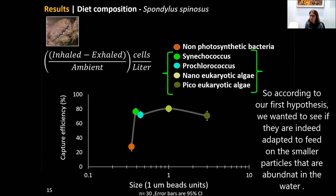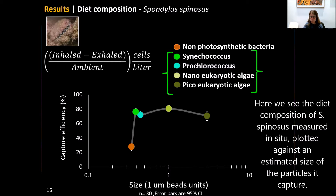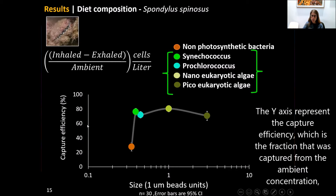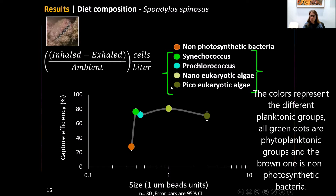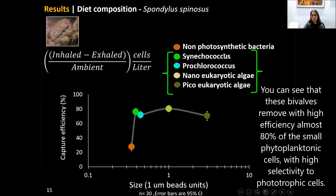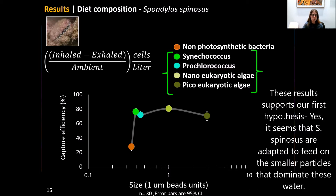According to our first hypothesis, we wanted to see if bivalves are adapted to feed on the smaller particles abundant in the water. Here we see the diet composition of Spondylus spinosus measured in situ, plotted against the estimated size of particles captured. The y-axis represents capture efficiency — the fraction captured from the ambient concentration, specifically the concentration difference between inhaled and exhaled water divided by ambient concentration. You can see that this bivalve removed almost 80% of the small phytoplanktonic cells with high selectivity for phototrophic cells, supporting our first hypothesis.